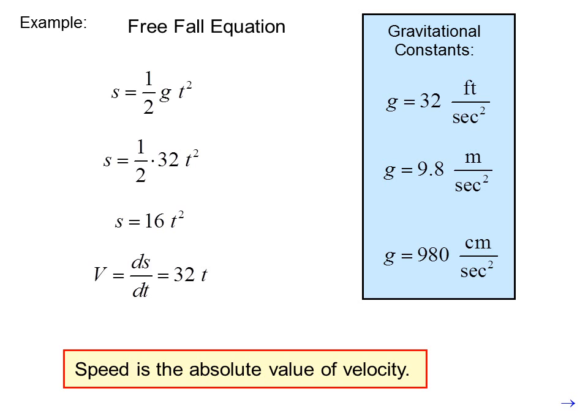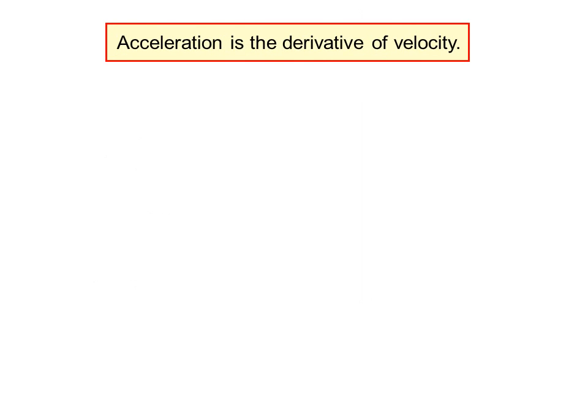Speed is the absolute value of velocity. Acceleration is the derivative of velocity. A equals dV dt, that is the derivative of velocity, or d²S dt², that is the second derivative of position. Example: if V equals 32 T, acceleration is 32.